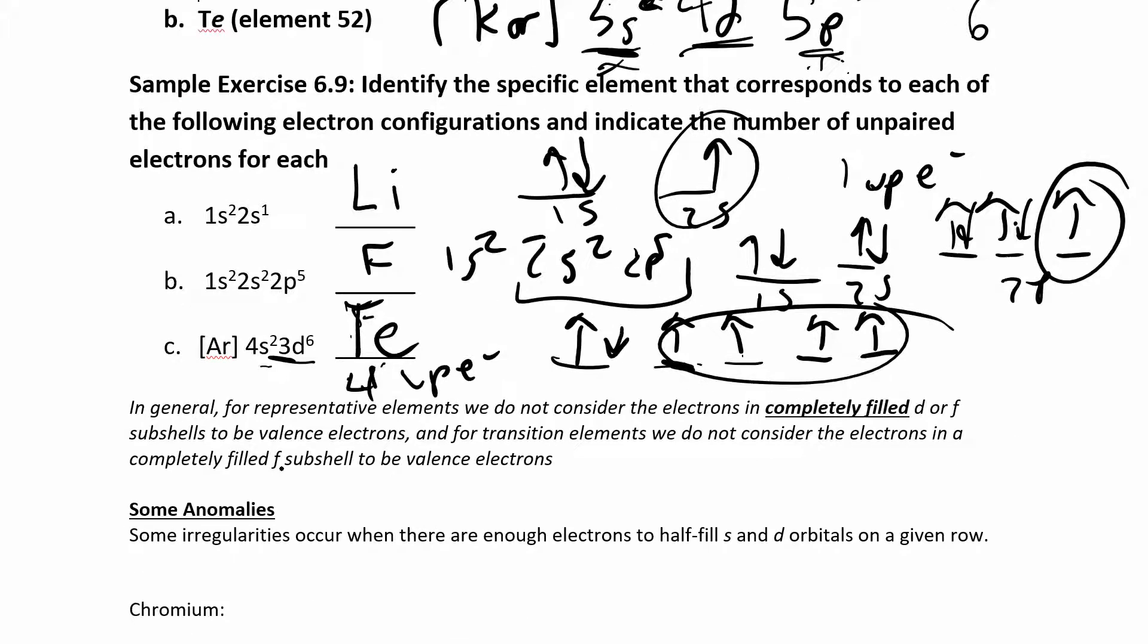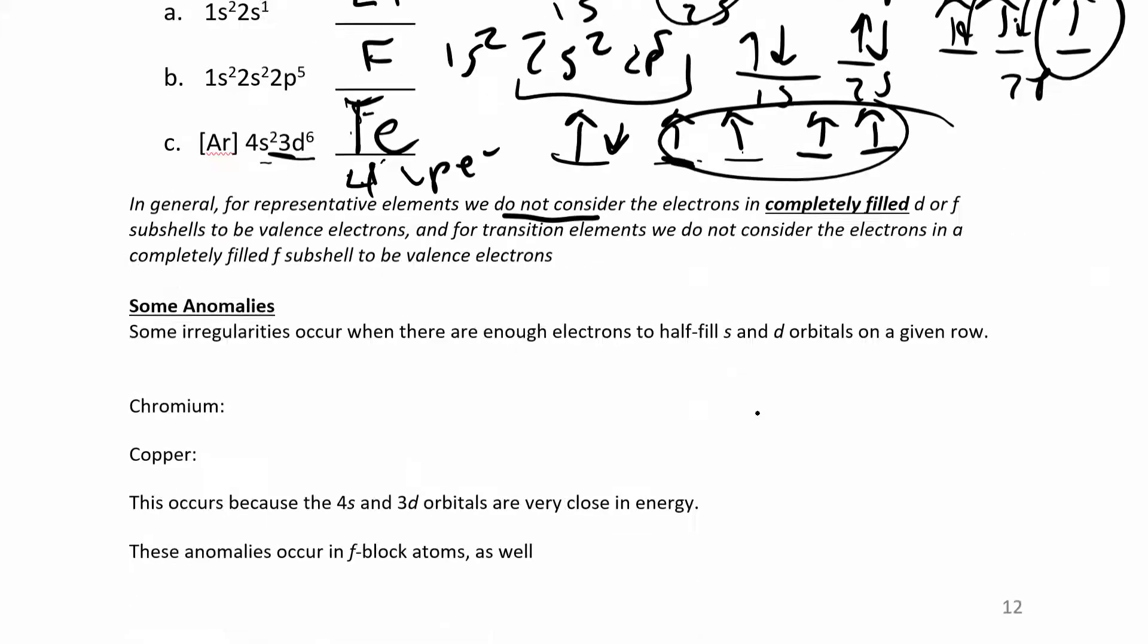So just to summarize again, in general, if you have a completely filled D or F subshell, if they're filled, we don't consider them to be valence electrons. If you have transition elements, we don't consider, right, full F block either. So if you have partially filled, then they will count in the number of valence electrons.